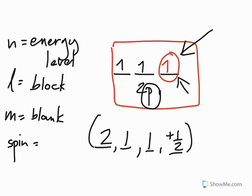And again, the spin is either spin up or spin down. Again, if it's spin up, it's plus 1 half. If it's spin down, it's negative 1 half.